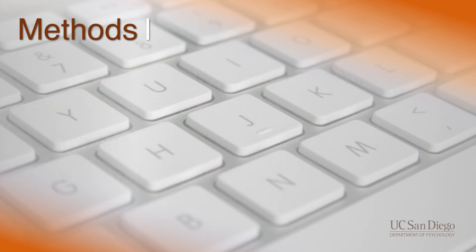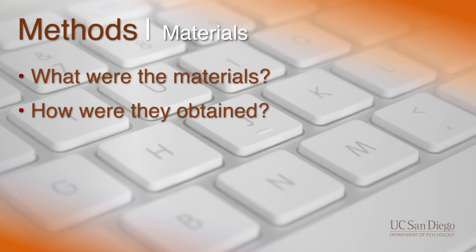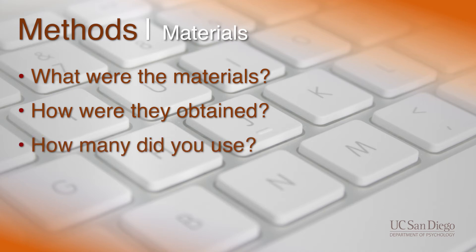Number three: materials. What did your participants interact with? What were the materials? How did you get them? If you used a variety of materials, how many did you use? The key here is to clearly describe each of the materials you used so that someone else could easily replicate your design.